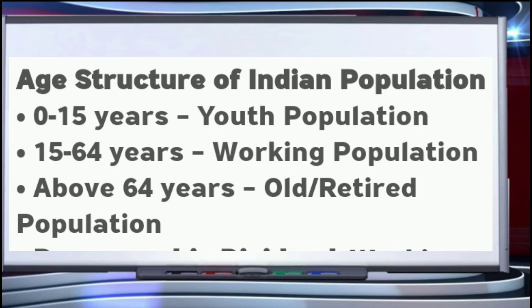On the other hand, the dependents include the elderly and the children. There is a formula to find out the dependency ratio. That is: dependency ratio equals population below 15 plus population above 64, divided by population of the 15 to 64 age group.